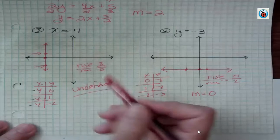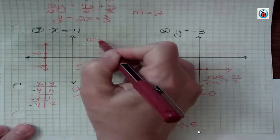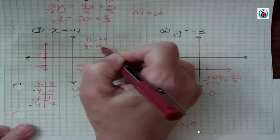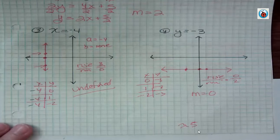And the y-intercept, well, there is none. So here I could say A or x-intercept is negative 4, but B is none. There is no y-intercept here. It's never going to cross the y-axis because it's parallel.